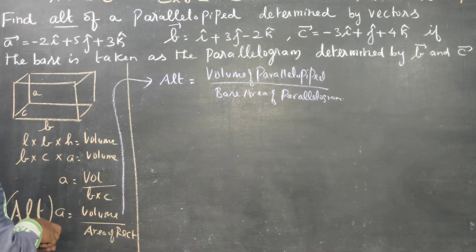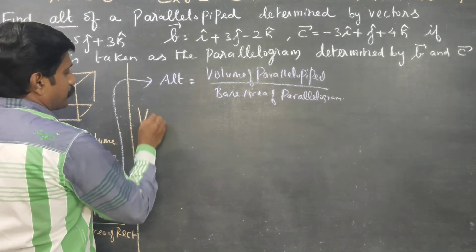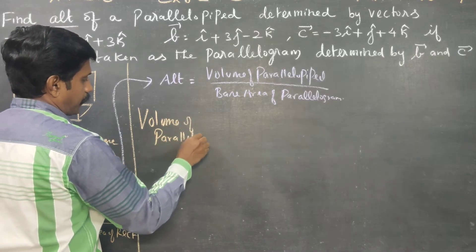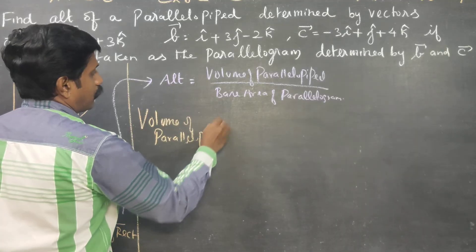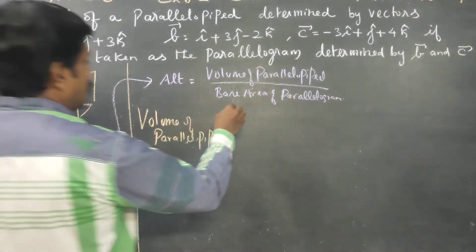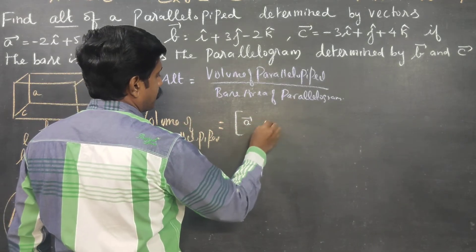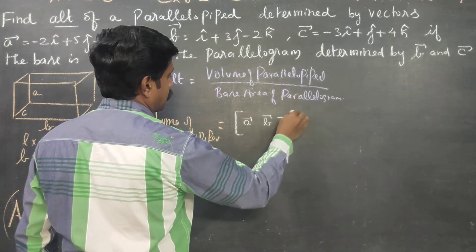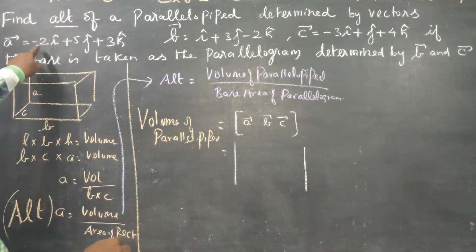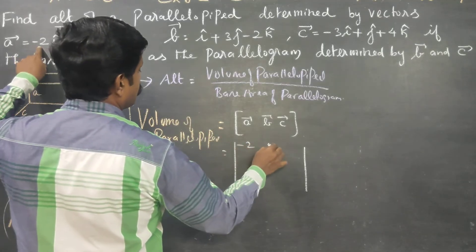Volume of the parallelepiped — what is the volume of a parallelepiped? Volume of a parallelepiped is the scalar triple product or box product. That is, for vectors A, B, and C, the box product gives the volume of the parallelepiped.